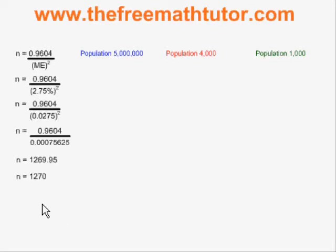This margin of error formula has been filled in asking for a 2.75% margin of error to find out what sample size would be required to achieve that. 1,270 people are enough to give you a margin of error of 2.75%.